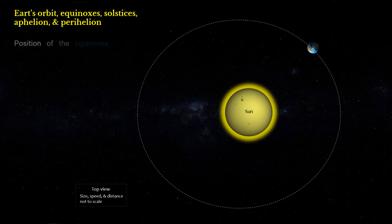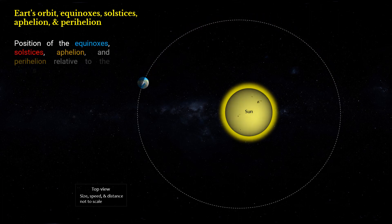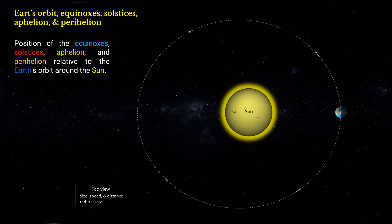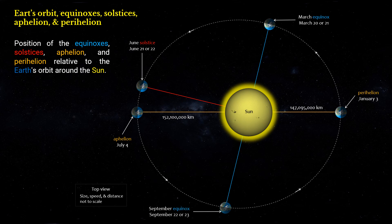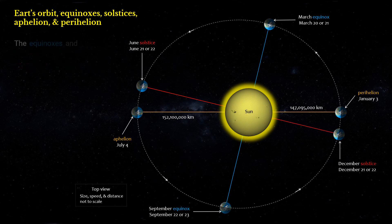The positions of the equinoxes, solstices, aphelion, and perihelion relative to the Earth's orbit around the Sun: Perihelion, January 3rd; March equinox, March 20th or 21st; June solstice, June 21st or 22nd; Aphelion, July 4th; September equinox, September 22nd or 23rd; December solstice, December 21st or 22nd. The equinoxes and solstices are 90 degrees apart in the ecliptic plane.